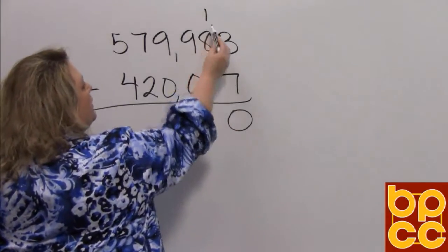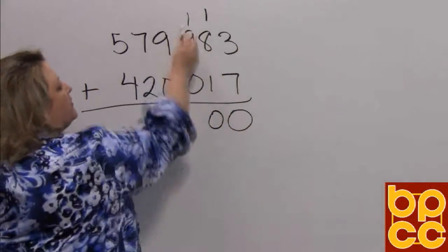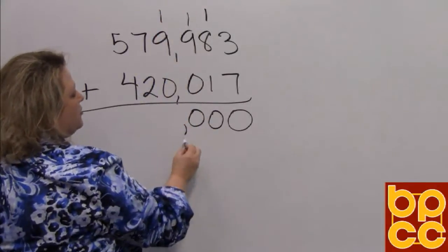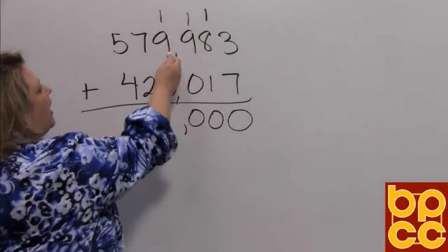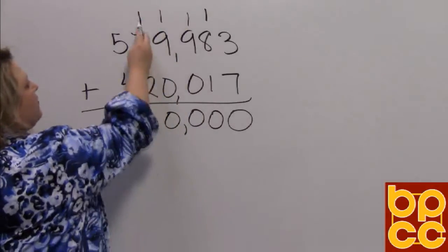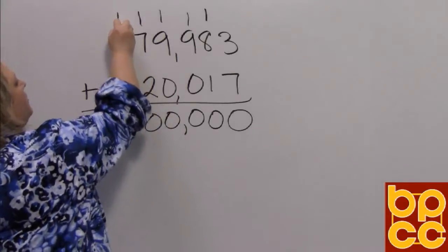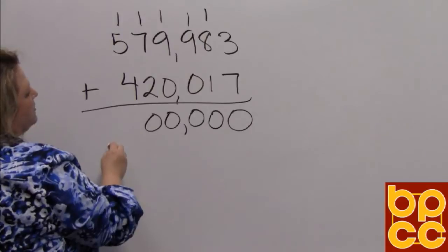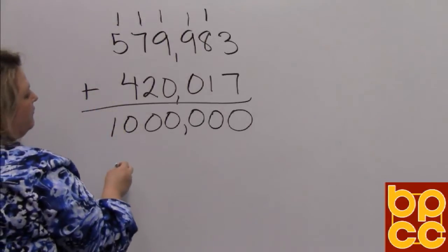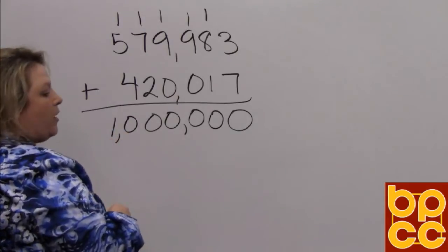And then you add. Eight plus one is nine, plus one more makes ten — carry the one again. Nine plus one is ten, put the zero, carry the one again. Make sure that you put your comma. Nine plus one is ten again. And here is seven plus one is eight, plus two is ten one more time. Five plus four is nine, plus one more makes ten. And this time, because there are no digits in front of the five and the four, you just bring the one down, so that total is one million.